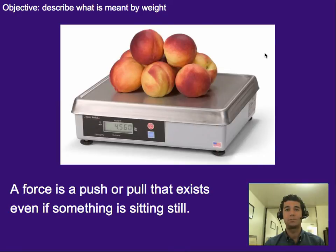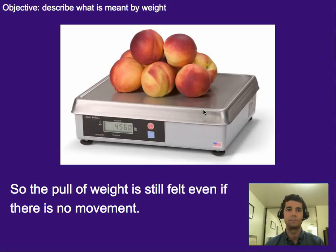Whereas with weight, we've got the weight of these peaches, which is pushing down on the scale here, but the peaches aren't moving and they're not going to begin to move at any point. Although gravity is acting on them, it's not able to actually accelerate them, like physically move them, but it still attributes a weight to it. So it pulls down on them, and that is what the weight is. The pull of weight is still felt even if there is no movement, whereas in order for something to be accelerating at the rate of gravity, it has to eventually be moving at some point.